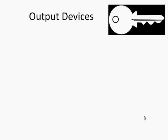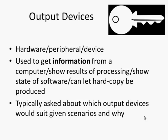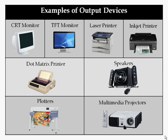In terms of output devices, the key things are that they are hardware, peripherals, or devices, but this time used to get information from a computer — to show the results of some processing, to show the state of software, and sometimes to let hard copy be produced, such as printouts. Again, you will typically be asked about which output devices would suit given scenarios and why. Here are some examples: some that give on-screen output, some that give printed output, and some that give audio output, though there are many others.